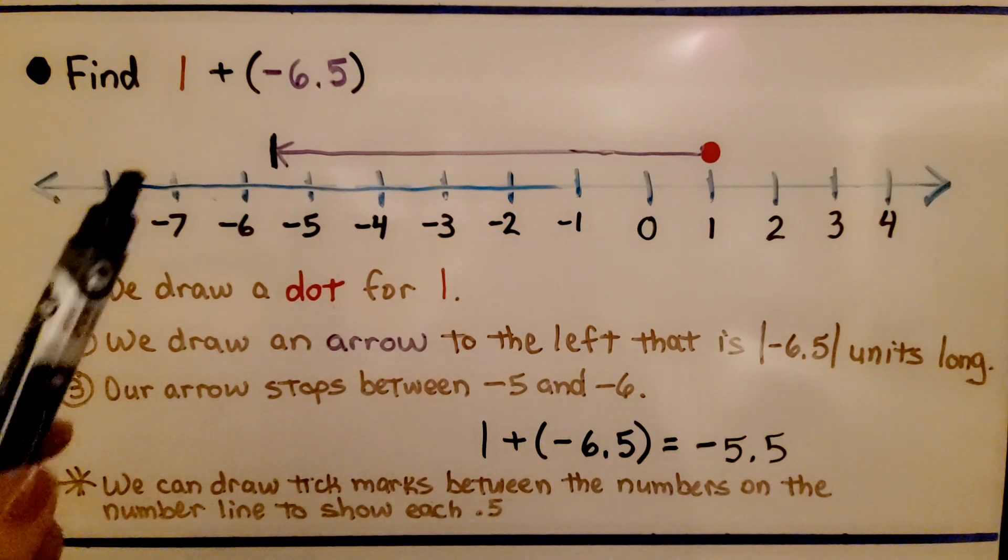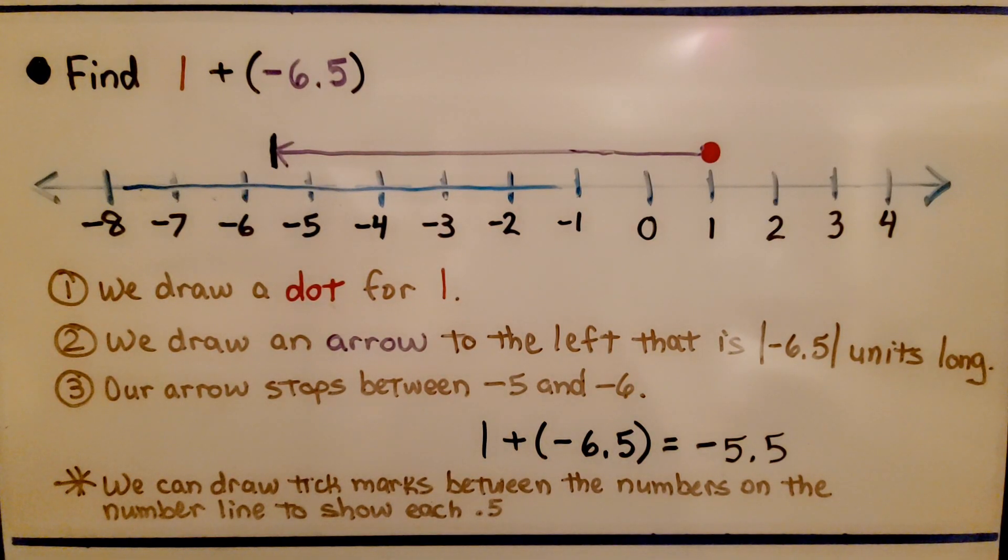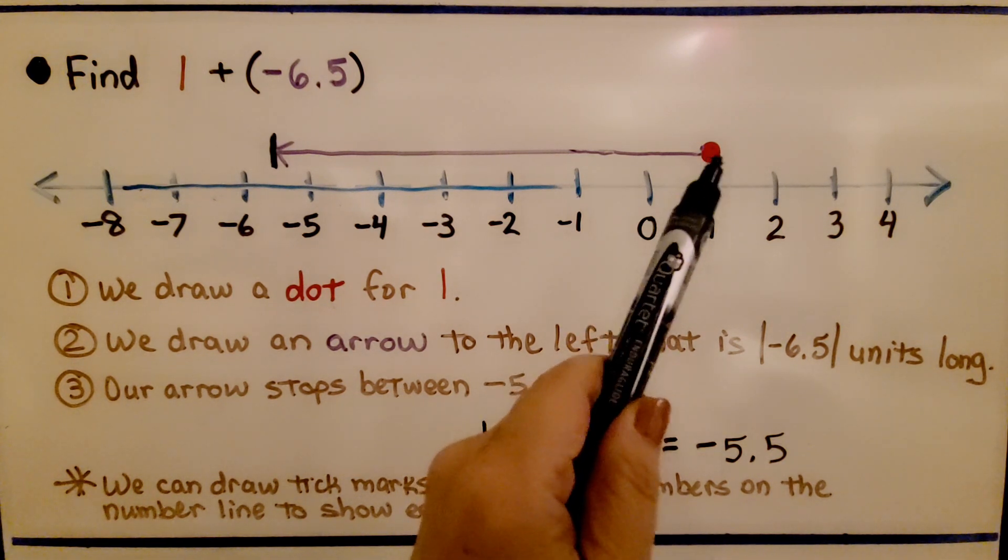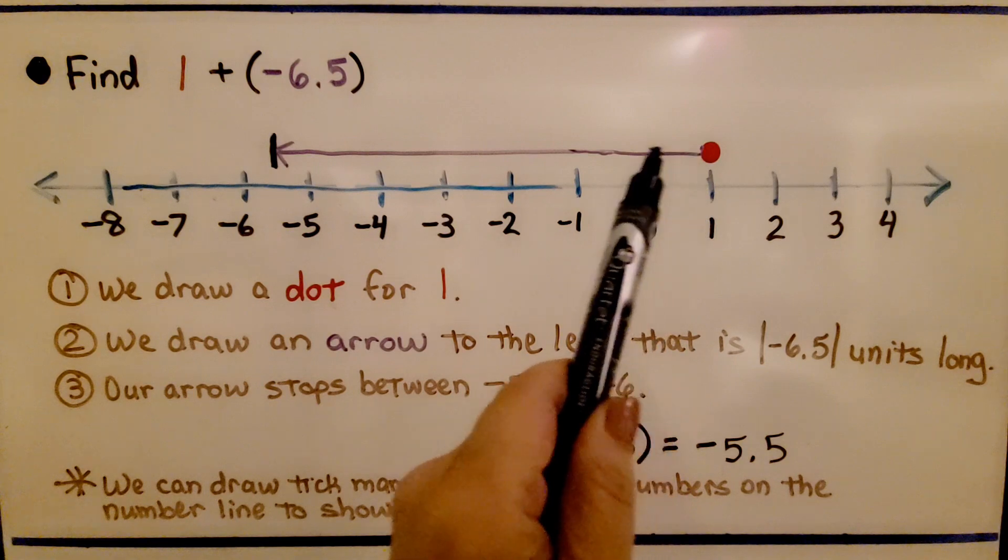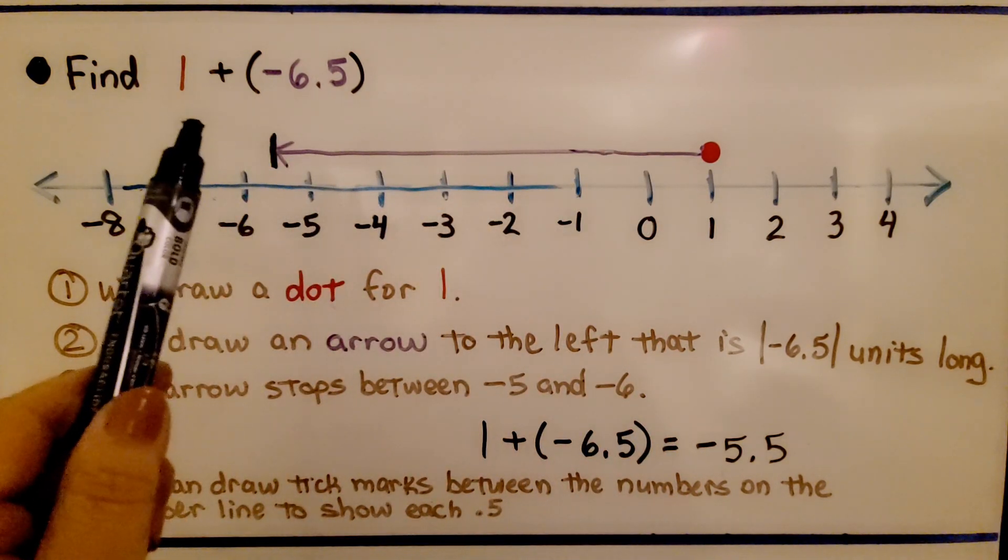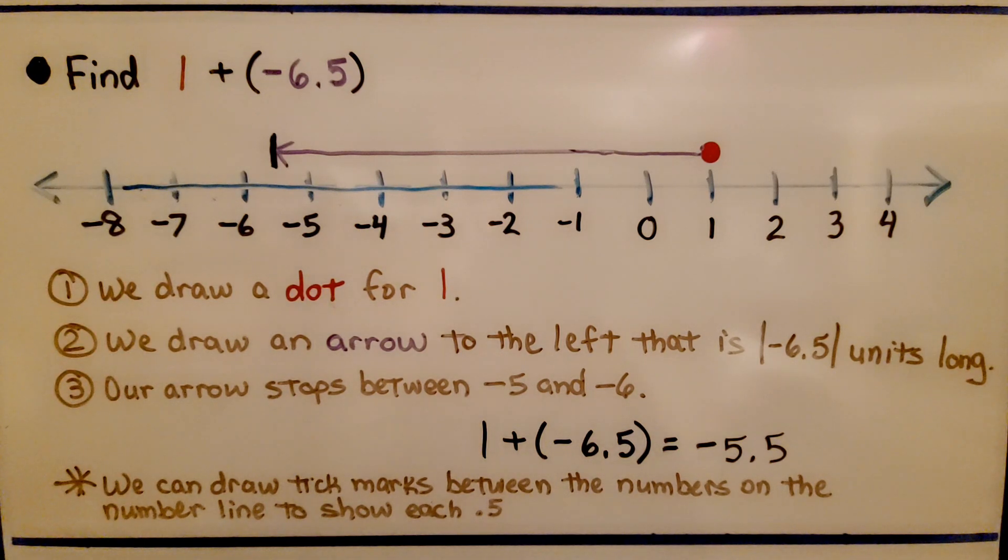Here we need to find 1 plus negative 6.5. We draw a dot for 1, it's right here, positive 1. We draw an arrow to the left that is the absolute value of negative 6.5 units long. So it's going to be 6.5 units long.